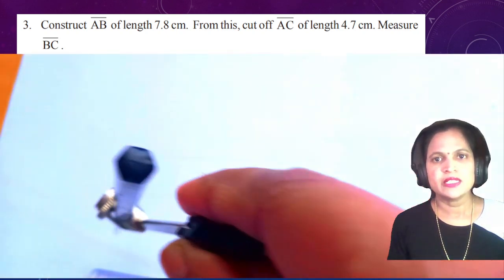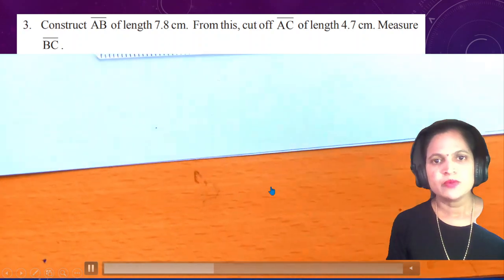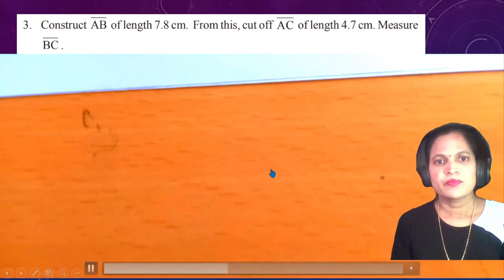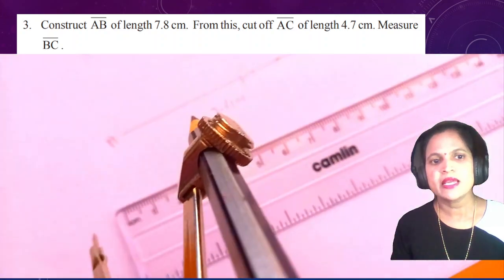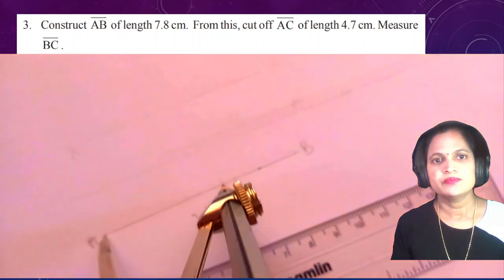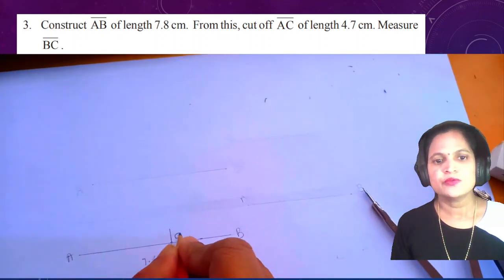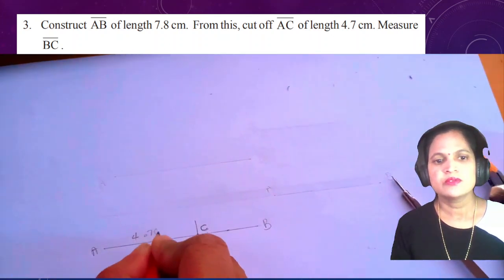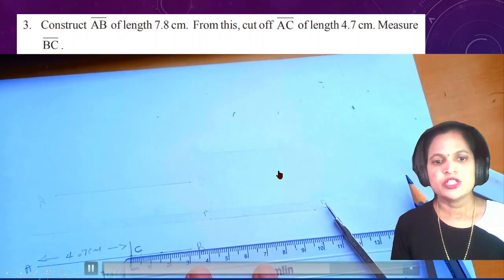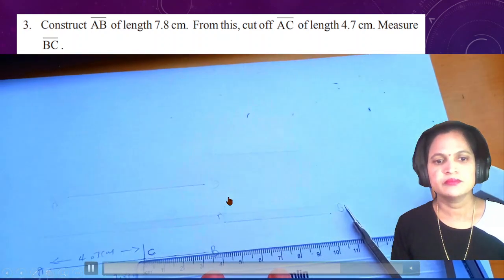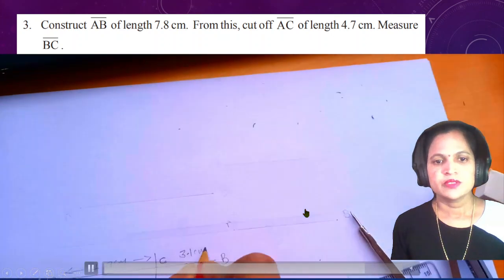Take AC of length 4.7 cm using the compass. Keep the needle at point A and cut the line, then mark this as point C — so AC is 4.7 cm. Now measure BC with the help of the scale. From here to here it is 3.1 cm.